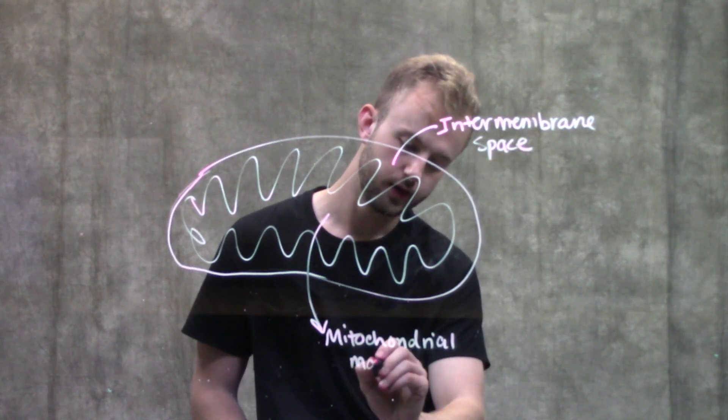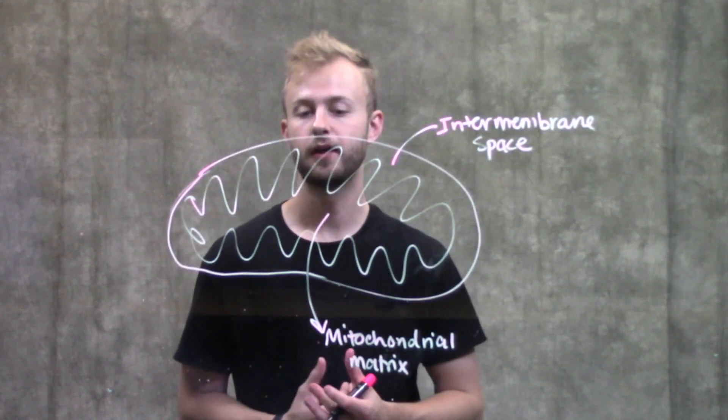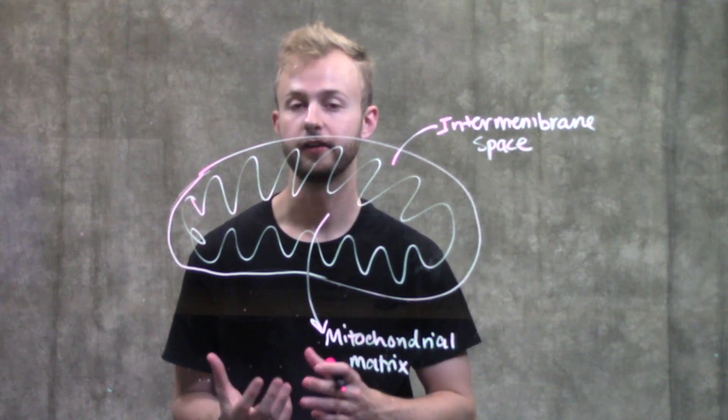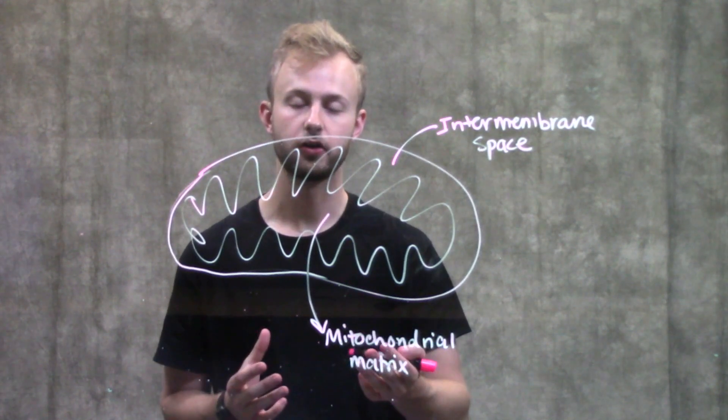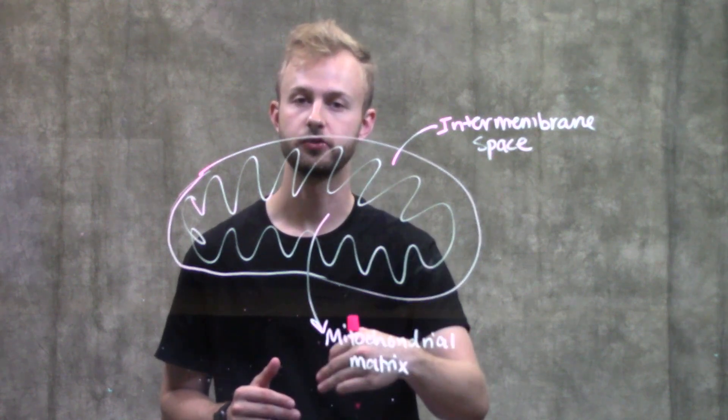Talking about some things that we have within our mitochondria: our mitochondria are a unique organelle in the fact that mitochondria actually have their own DNA and their own ribosomes inside of this mitochondrial matrix.